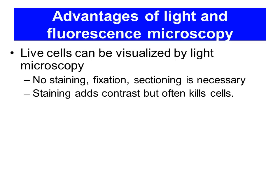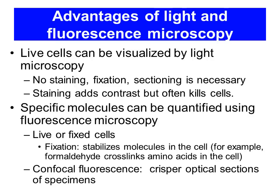Some advantages of light microscopy and fluorescent microscopy: live cells can be visualized. If the sample has its own fluorescence, it doesn't need staining, fixation, or sectioning. Staining adds contrast but often kills the cells. With fluorescent microscopy, you can engineer live cells — just like the embryonic stem cells with GFP or CFP — so the living cells produce that fluorescent protein. You can put that gene under the control of a particular promoter, for example one active only in liver cells or intestinal cells, so you can see whenever that promoter is active.